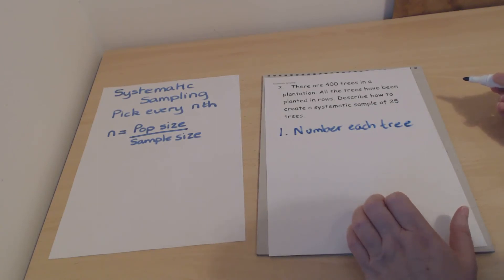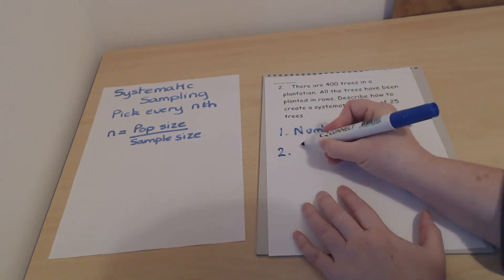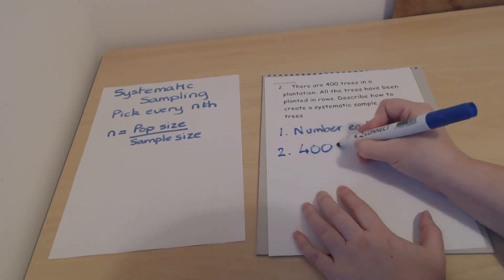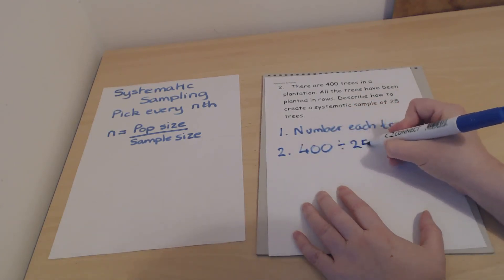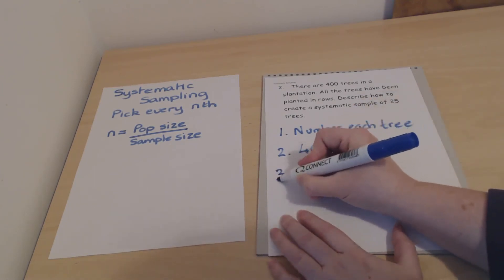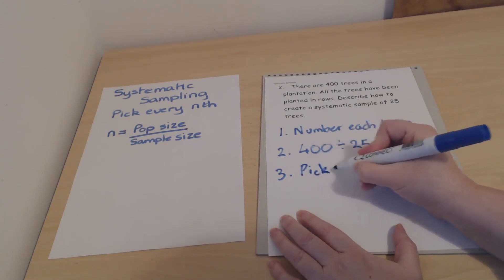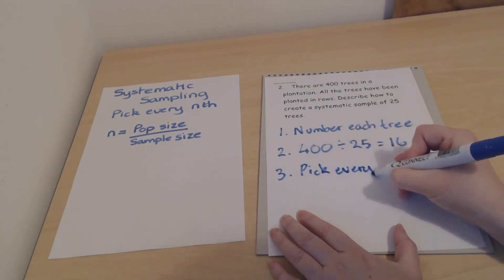Then to take a systematic sample, you would do 400 divided by 25, which is 16. So then you would pick every 16th tree.